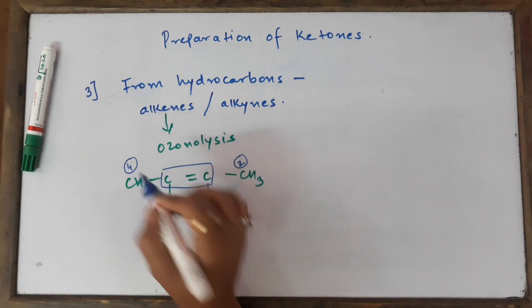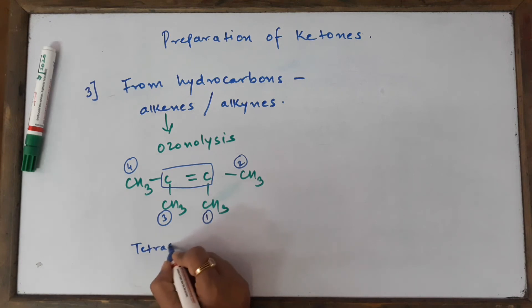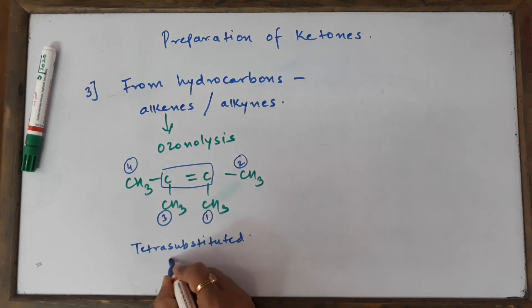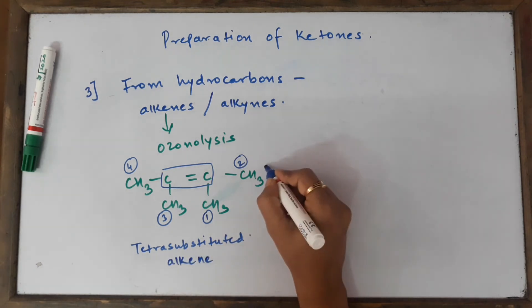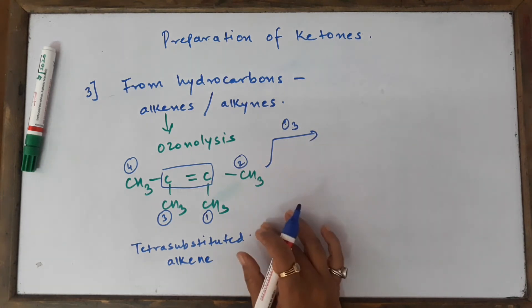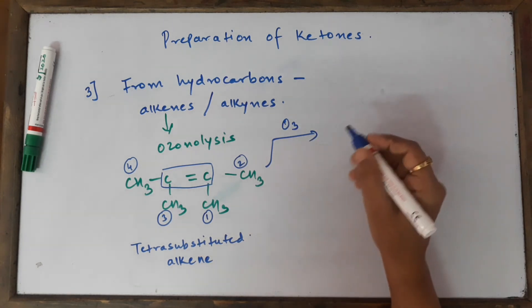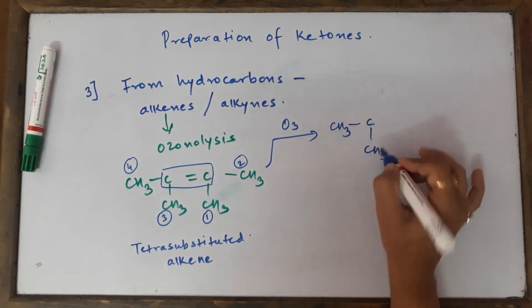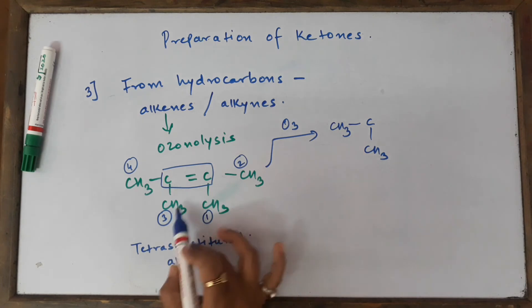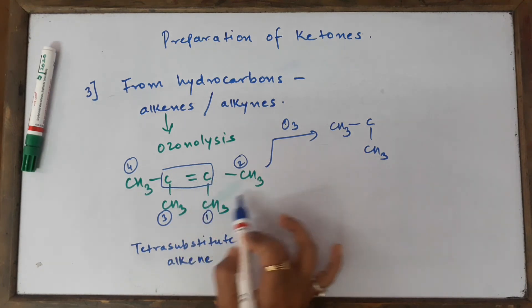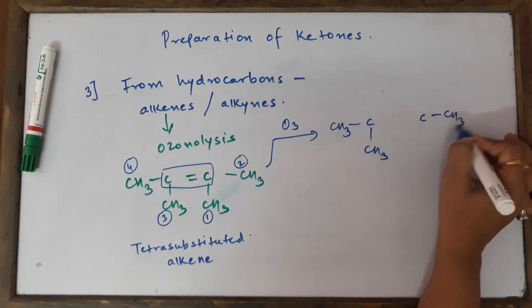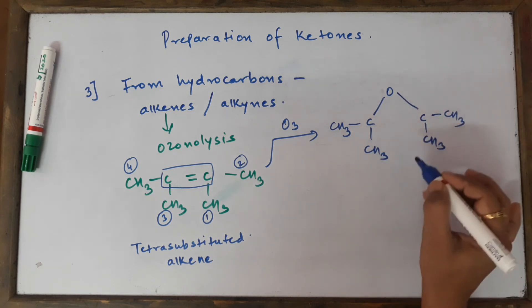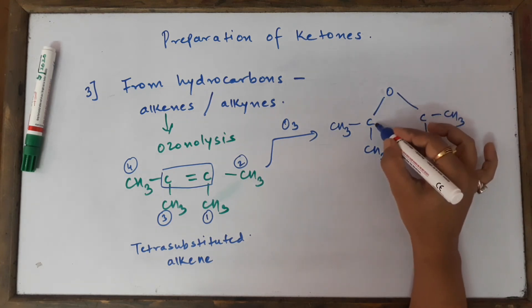This is called a tetra-substituted alkene. We are going to add the reagent O3 (ozone), which is an oxidizing agent. We had seen last time that we get an ozonide, which is a cyclic intermediate. It's very simple to draw this. We'll get CH3-C-CH3; these two bonds are going to break and we get the formation of an ozonide.